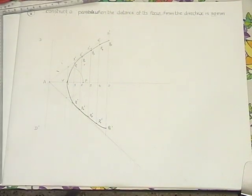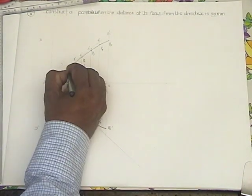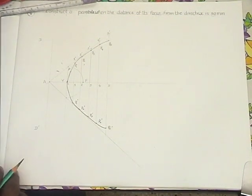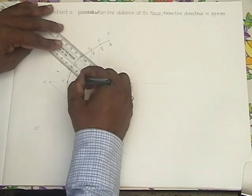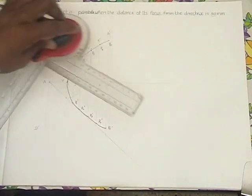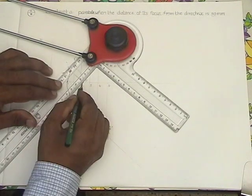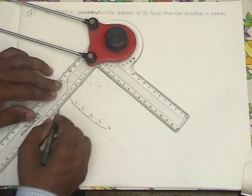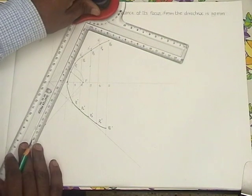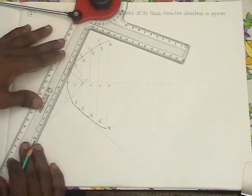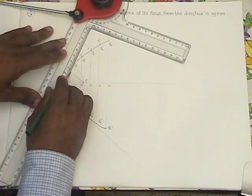Now choose any point on this parabola, try to get tangent and normal. Let P be any point on the curve. Join this P with F, you get PF. For PF you draw one perpendicular line, draw a line perpendicular to PF. It touches the directrix at some point. If this point as reference point, join these two.